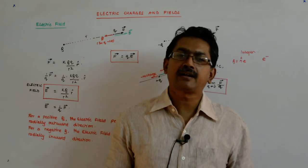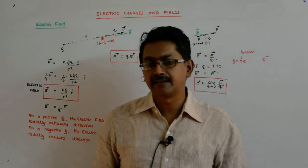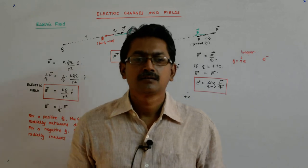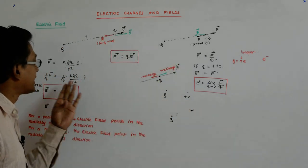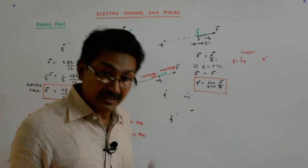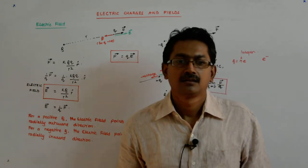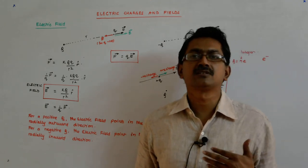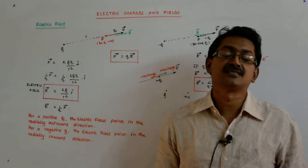You put a one microcoulomb charge here and go to the end of the universe, there will be some field there. Why not? Whatever it is, it is 10 to the power minus 200, but it is something. It has to be something. Everything in this universe is interacting with everything else in this universe.